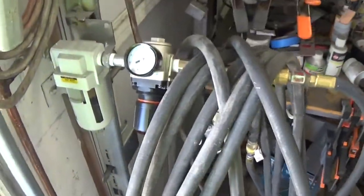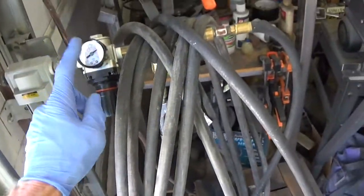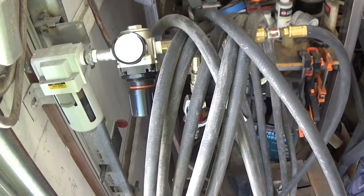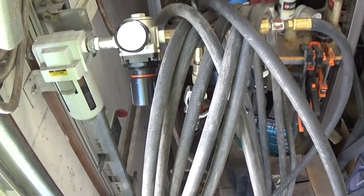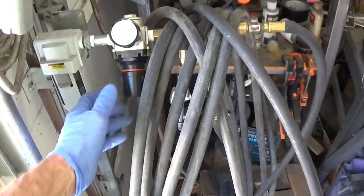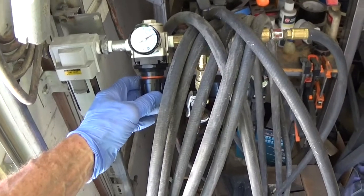What's nice about the two-stage is the lowest that it gets is like, I think, 135. And then it kicks back in and goes back up to 175. So you never have a low air pressure situation like you do with a one-stage for running all your air tools.